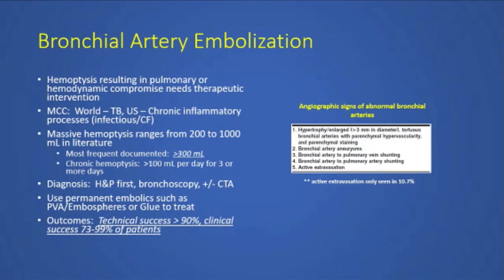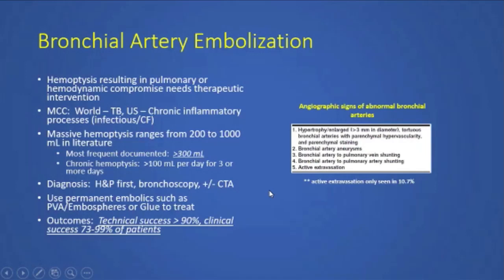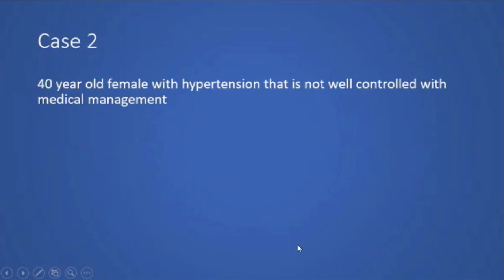In the United States, hemoptysis is usually due to a chronic inflammatory process such as cystic fibrosis. In the literature, hemoptysis ranges from 200 to 1,000 milliliters, with the most frequently documented volume being about 300 milliliters. On angiography, you're looking for hypertrophied or enlarged bronchial arteries, a bronchial artery aneurysm, shunting to the pulmonary vein or artery, and active extravasation — though active extravasation is only seen in about 10% of patients.